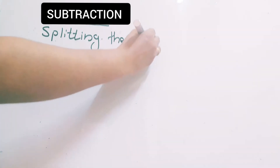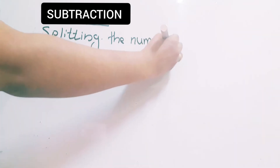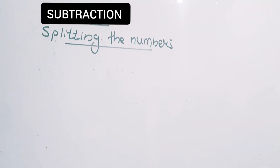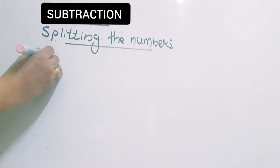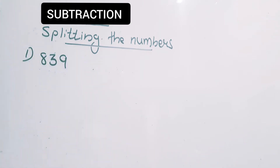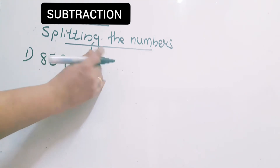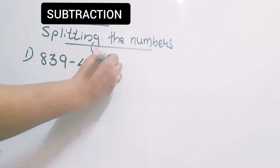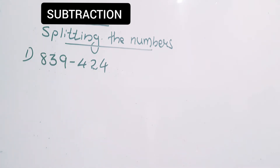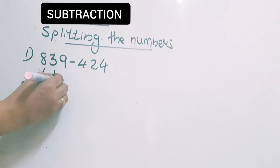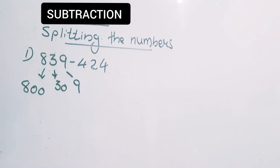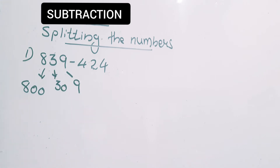You may get 2-digit, 3-digit, or 4-digit numbers. Let me start with a 3-digit number: 839 minus 424. This method is called splitting the numbers — we have to split the numbers based on their place values. So here 8 has place value 800, 3 has place value 30, and 9 has place value 9 only. First step is to split the numbers according to place value.